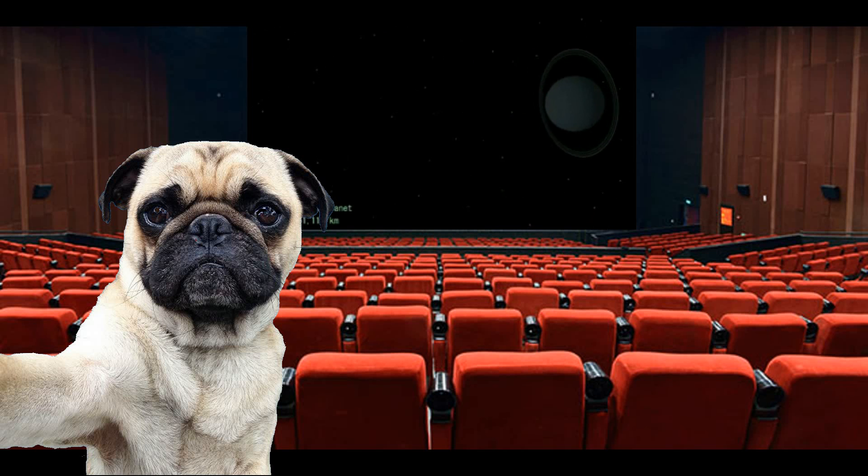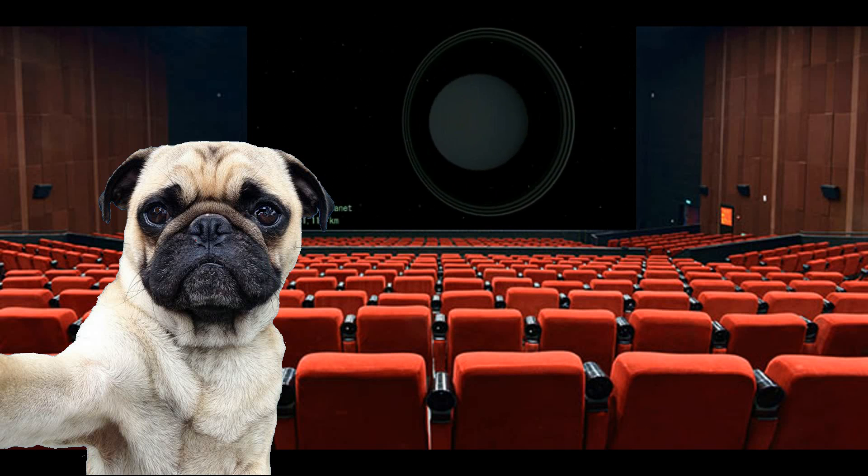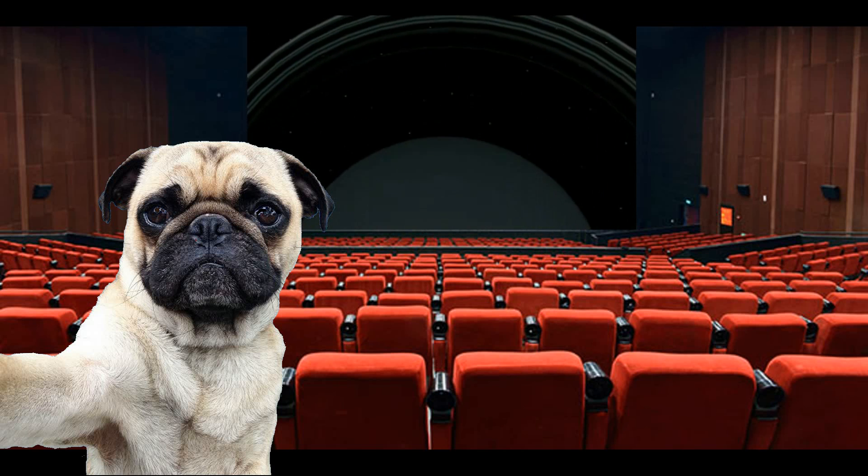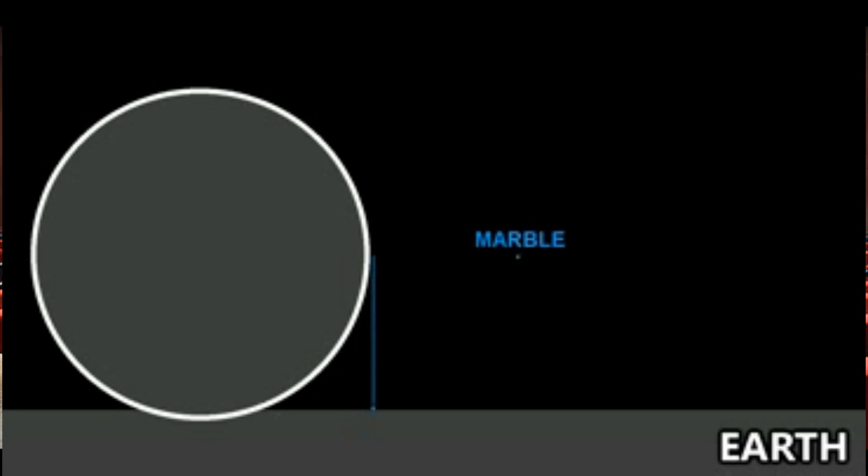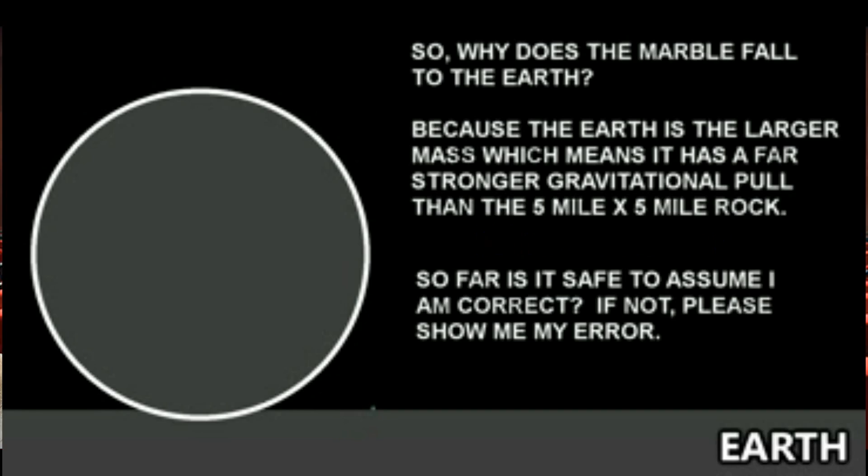Almost 100% accurate. The marble would fall downward towards the Earth, being the larger body with the larger gravity well, but it would be deflected slightly towards your massive object shown in the picture. Now is this correct that because the Earth is the larger mass, which means it has a far stronger gravitational pull than the five mile by five mile rock, is it safe to assume that I am correct in saying that is the reason the marble falls to the Earth?